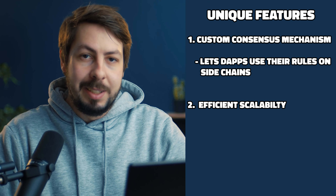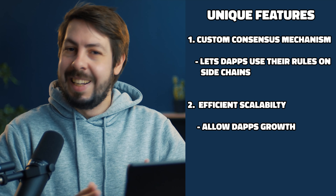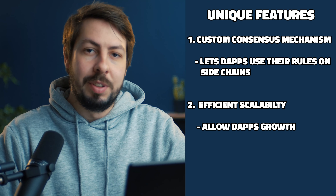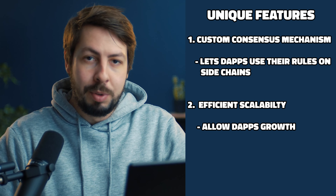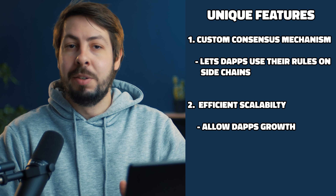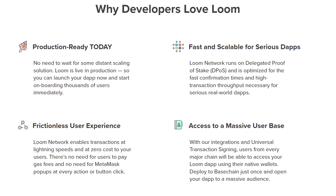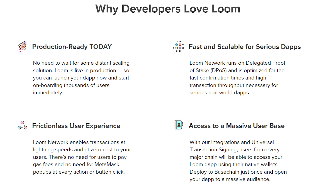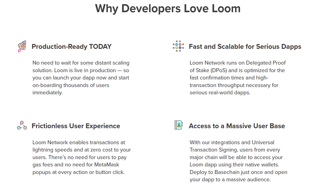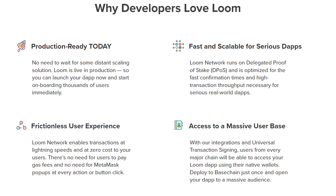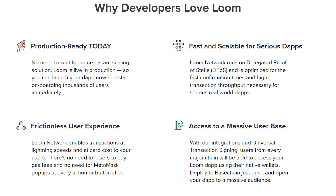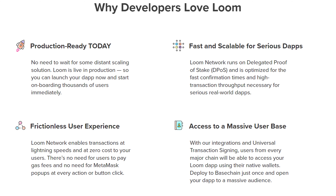Second, we have efficient scalability. Loom Network allows dApps on the Ethereum network to grow bigger without any headaches. They use a special trick called delegated proof-of-stake sidechains to do exactly this.